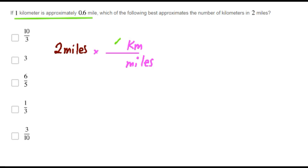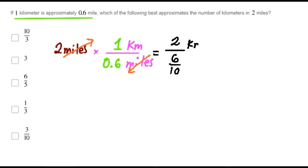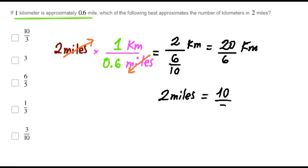Miles and miles are eliminated, so we get 2 over (6 over 10) kilometers. This is 20 over 6 kilometers. Finally, two miles is 10 over 3 kilometers. Choice A is correct.